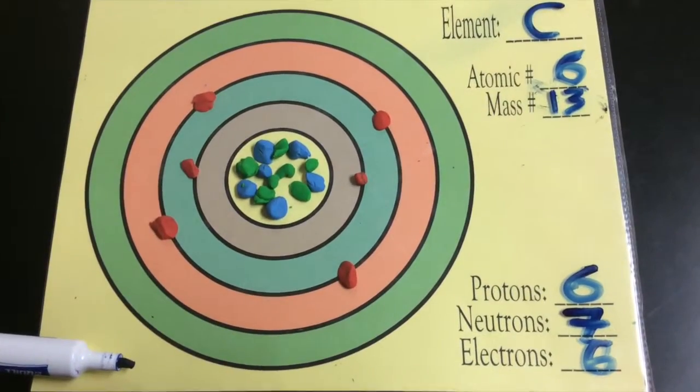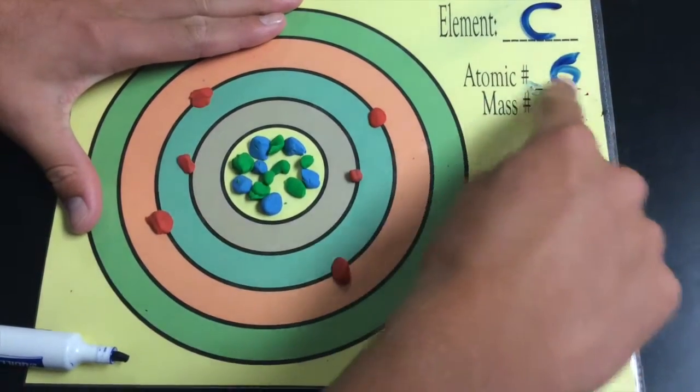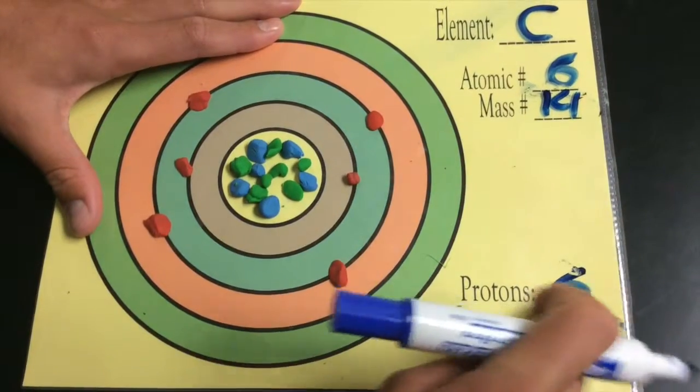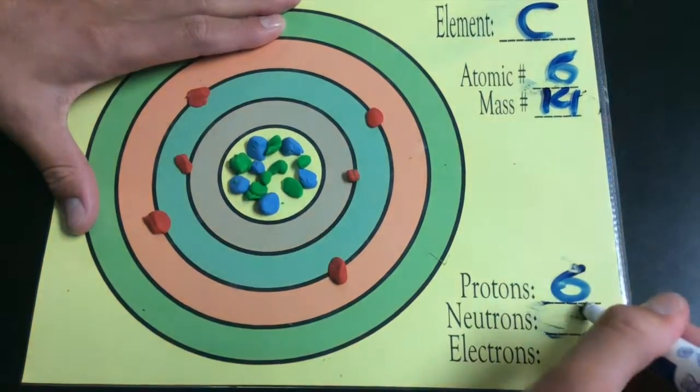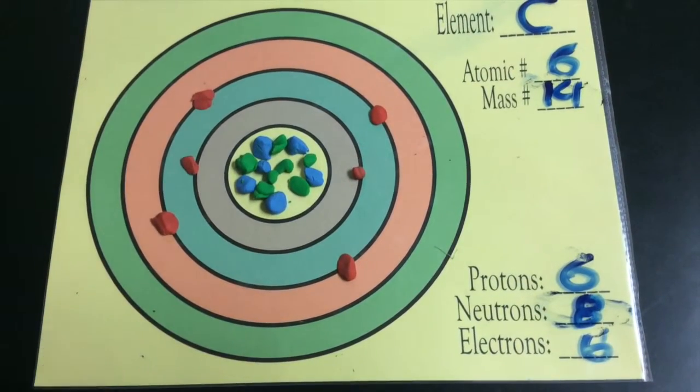So now we're doing carbon-14, which of course has a mass of 14. This means that it has eight neutrons and the same number of protons and electrons. So that's carbon-14.